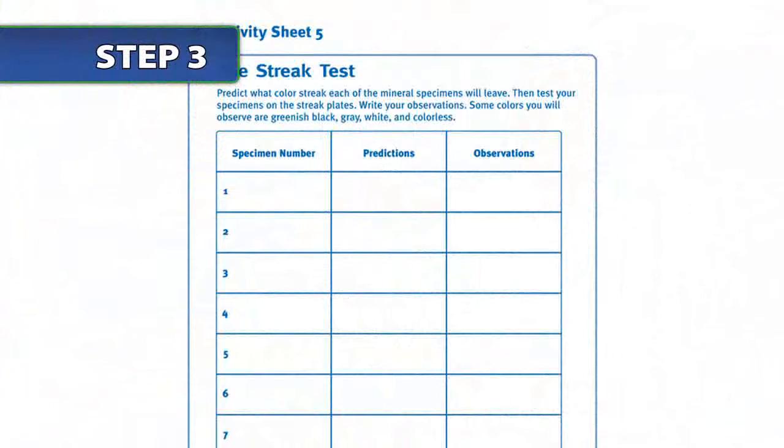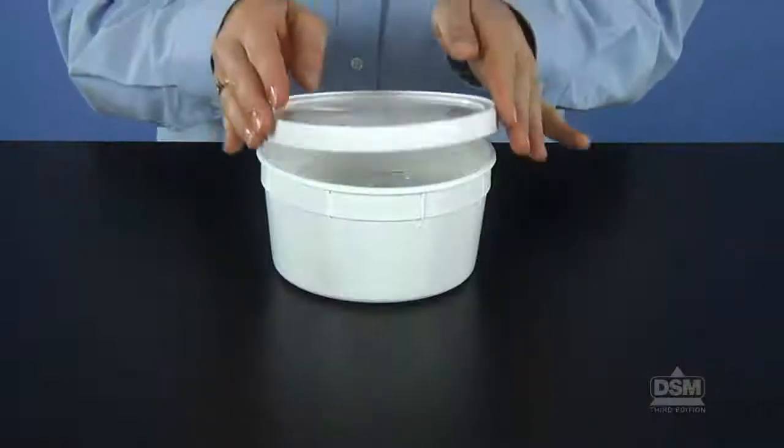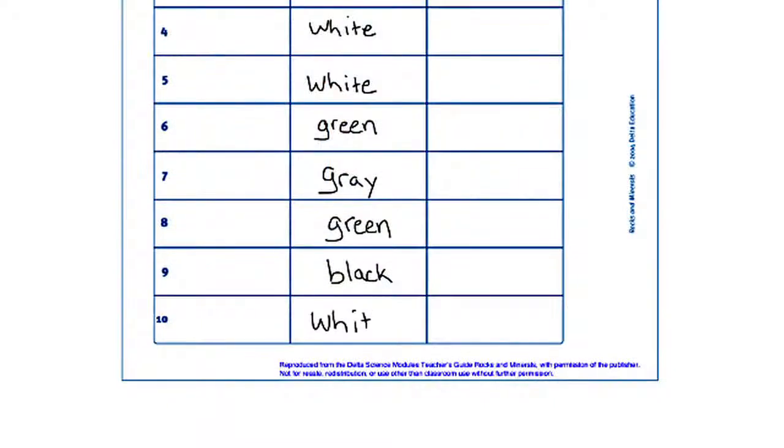Distribute a copy of Activity Sheet 5 to each student and divide the class into groups of four. Have each group cover their work area with newspaper and give a container of materials to each group. Help students predict what color streak each mineral will leave on the streak plate and then instruct them to record their predictions on the activity sheet.